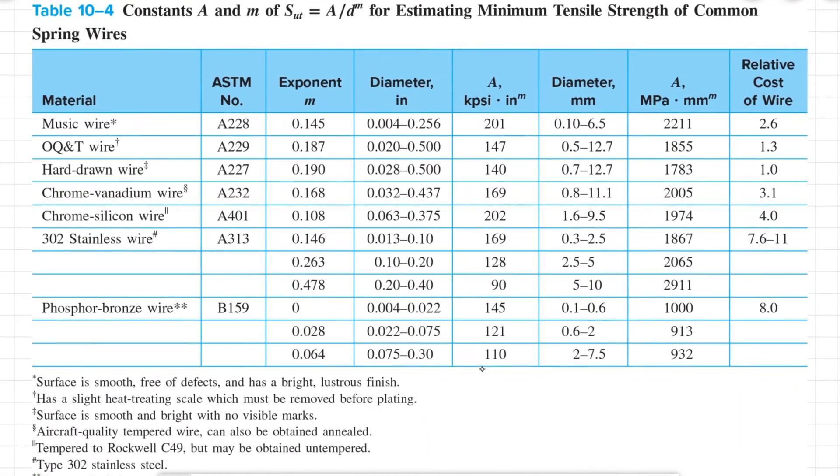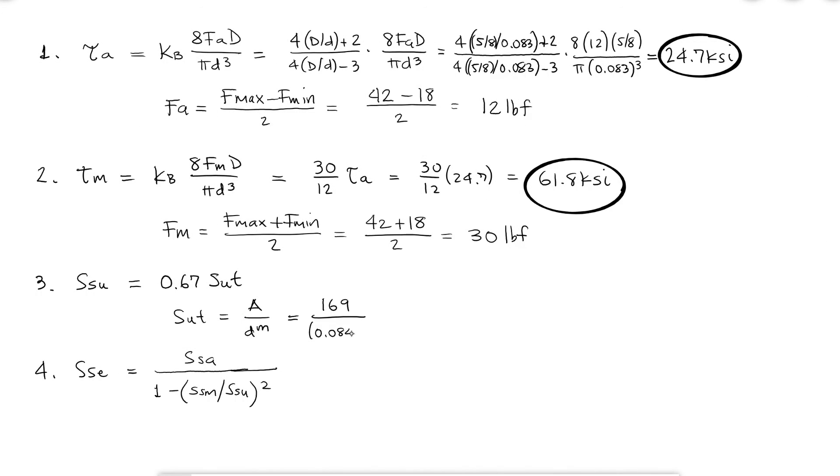By looking at the table, I would see that for a diameter of 0.084 inches, which is between 0.013 and 0.100 for a 302 stainless wire, the A coefficient is 169 and the exponent M is 0.146. Using these values, I find a tensile strength of 243 ksi, and from what we learned today, the torsional modulus of rupture would be 67% of that.